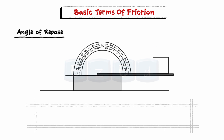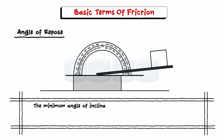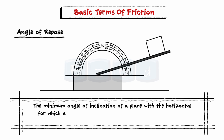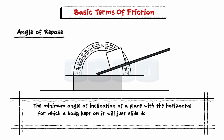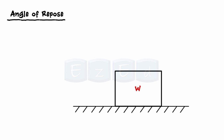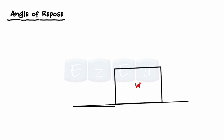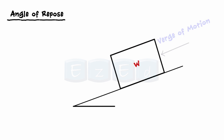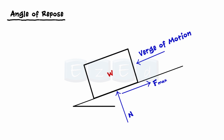Angle of repose: the minimum angle of inclination of a plane with the horizontal for which a body kept on it will just slide down without application of any external force is called the angle of repose. Consider a block of weight W resting on a rough horizontal plane. The plane is slowly tilted till the block is just on the verge of sliding down the slope. At this position, the angle of inclination of the plane is called the angle of repose, denoted by the letter alpha.